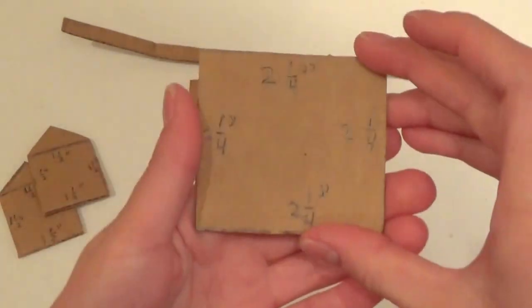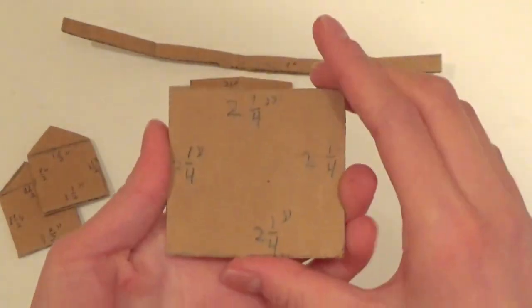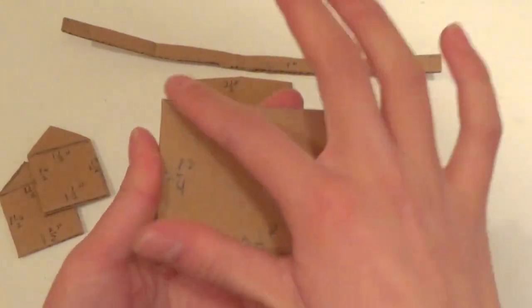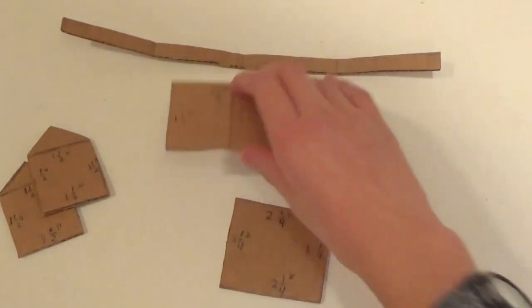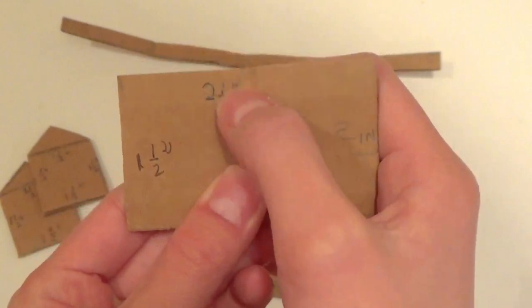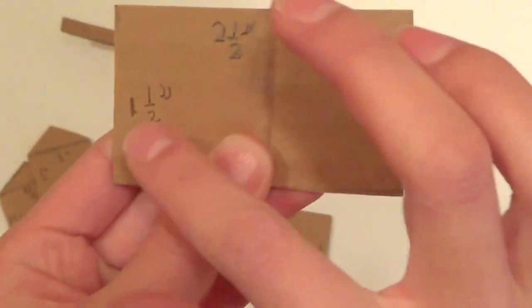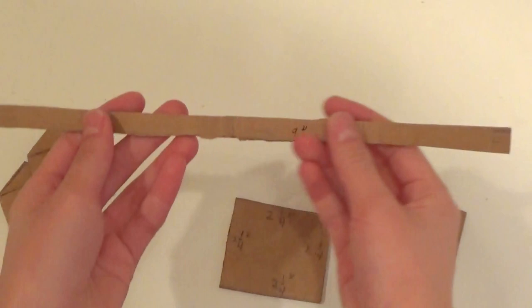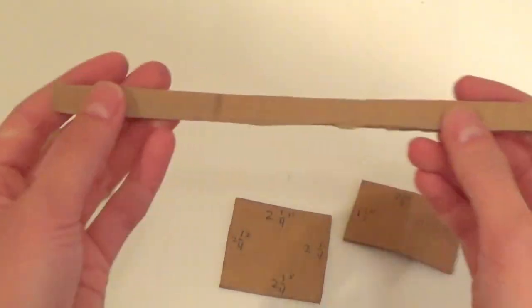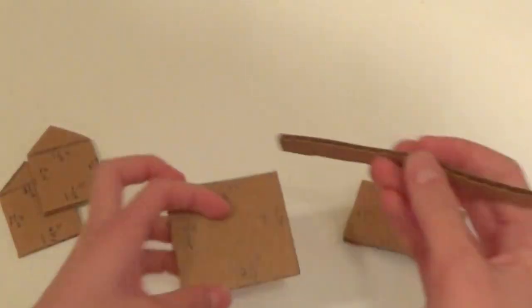You'll need another piece that is two and one-fourth inches square, a rectangle that is two and a half inches long by one and a half inches wide, and a long strip of cardboard that is about nine inches by less than a half inch. It needs to be long enough to go around this whole square.